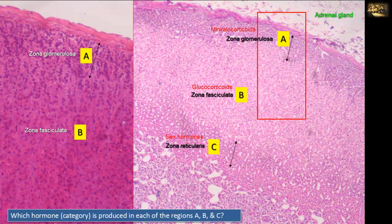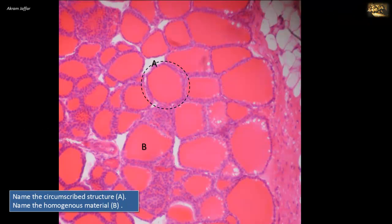As you might have noticed, these hormones control the three S's in the body: S for salt (mineralocorticoids), S for sugar (glucocorticoids), and S for sex (the sex hormones). Name the circumscribed structure A and the homogenous material B.